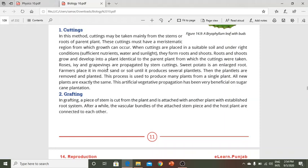Roses, ivy, and grape vines are produced this way. Sweet potato is a large root that farmers produce in moist sand, creating several plantlets. The plantlets are then removed and planted separately. All these plants are produced from a single parent plant.